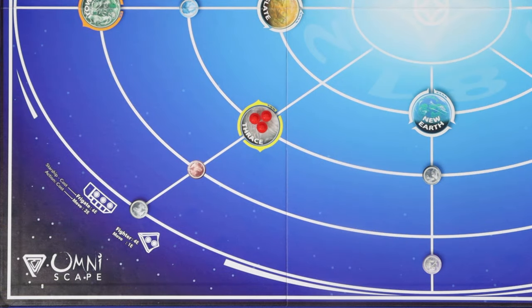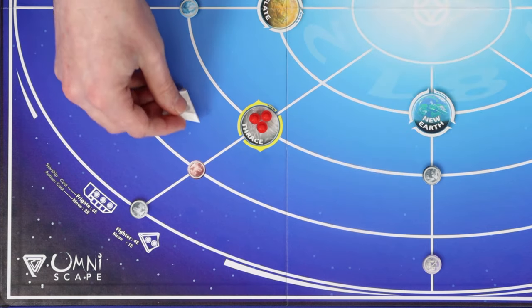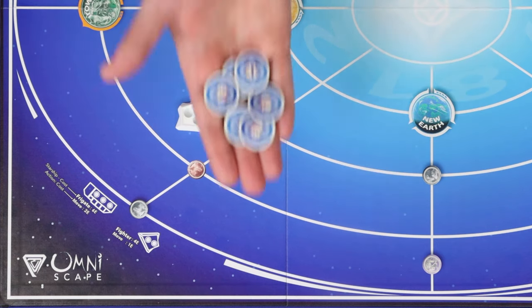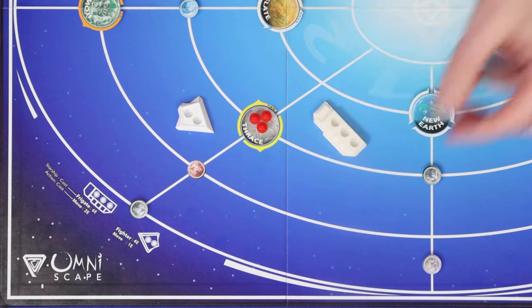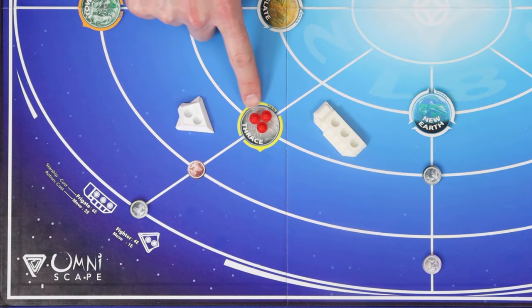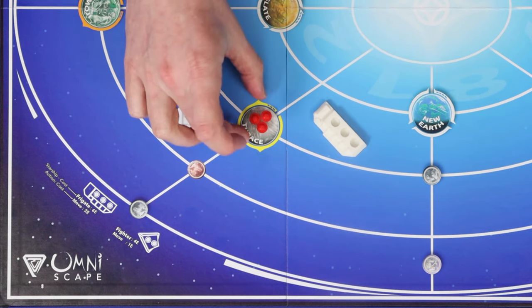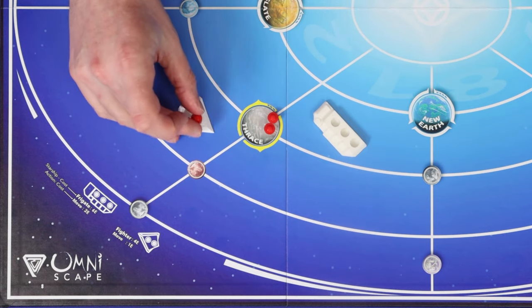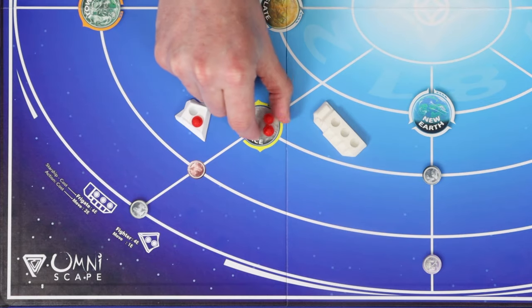Your other options when creating are to create new ships. You can spend four energy to create a fighter or six energy to create a frigate. The new ship must be placed orbiting a planet that you've colonized, and you must move at least one colony from that planet into the new starship when you build it.